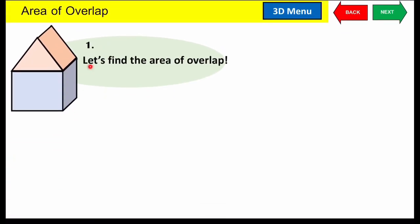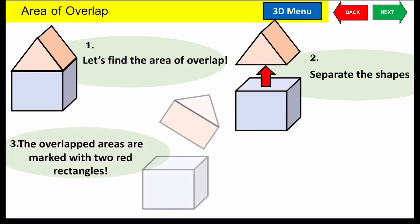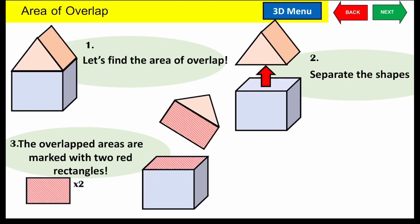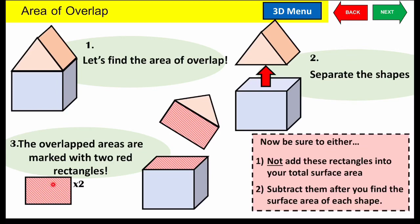You're going to find the area of overlap in different problems. In our house problem, we're going to remove the roof and you'll see a rectangular prism and a triangular prism. Then you expose the area of overlap — two identical rectangles — and you make sure that you either subtract these rectangles after you've found the surface area of each of these two shapes, or that you just don't add them in the first place. Recognize that you don't want to add this piece or the top piece here.